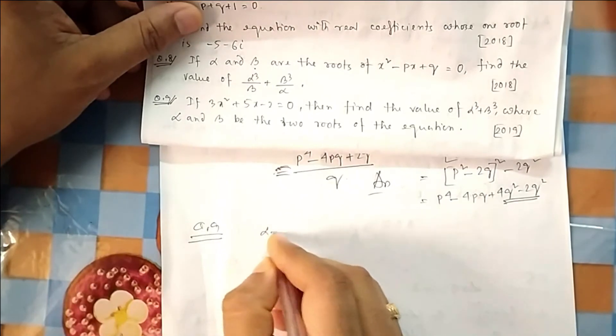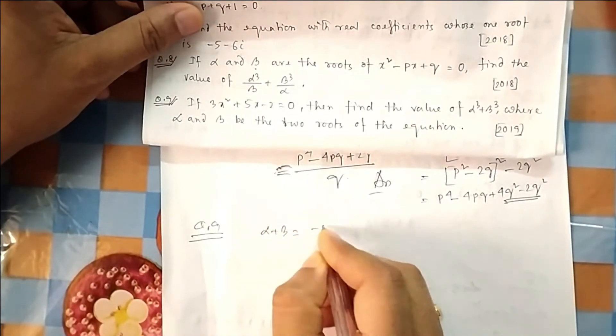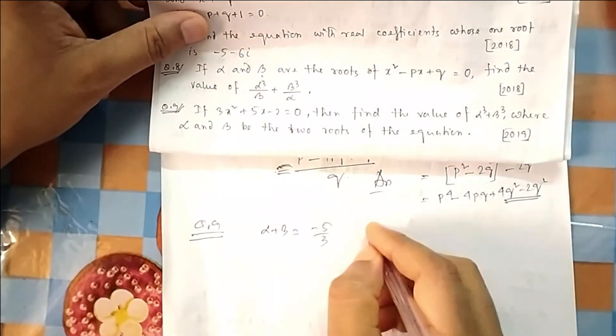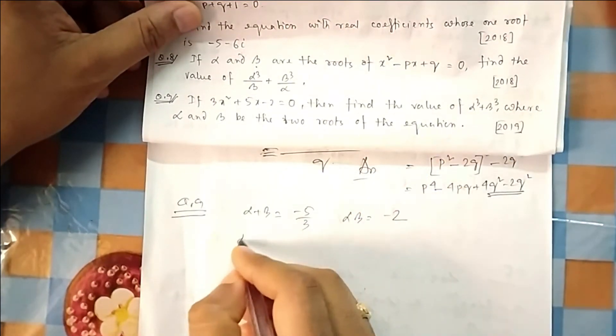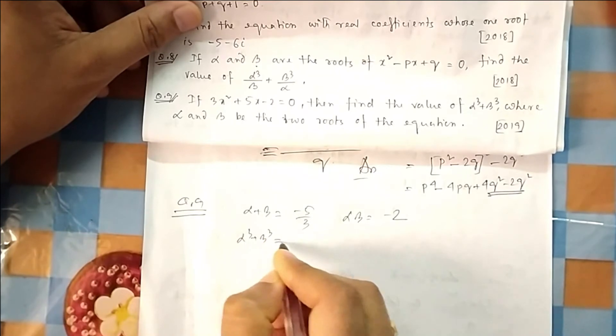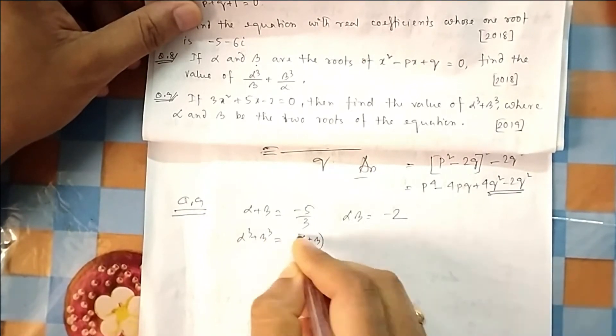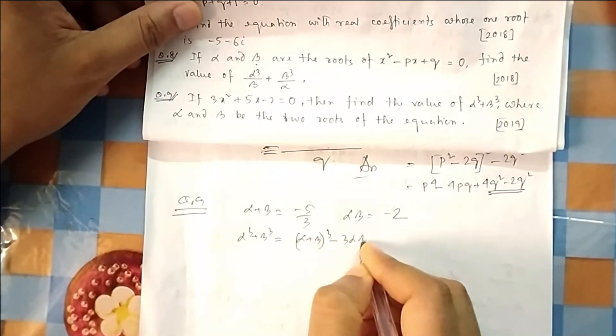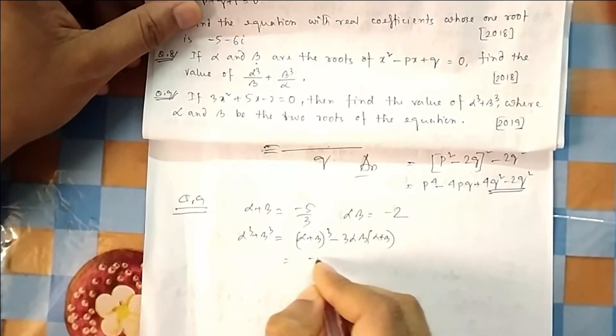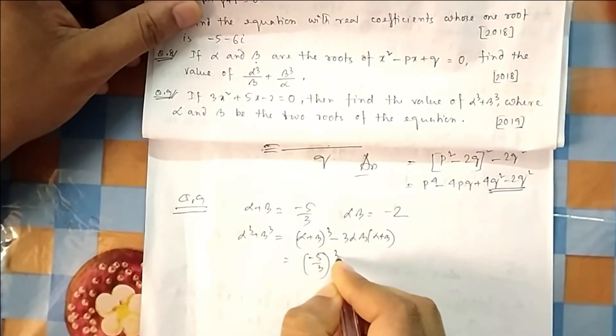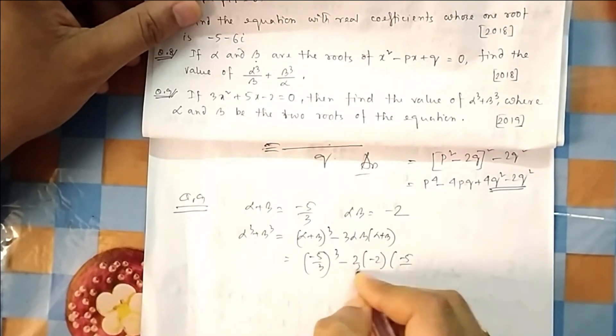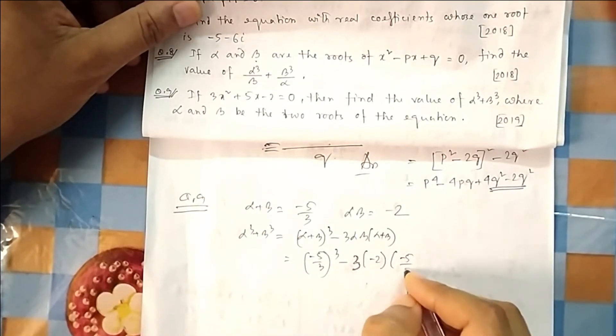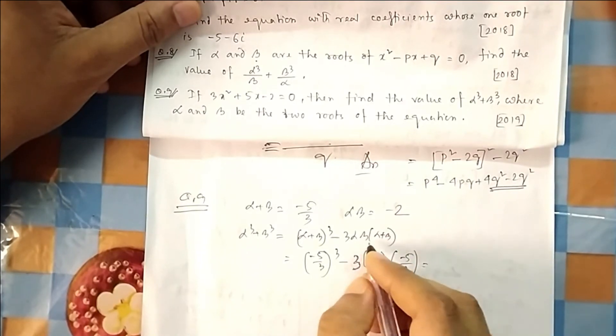Okay, this is also again easy. Sum of the roots is -b/a, -5/3, and product of the roots is -2/3. So what they are asking: find the value of α³ + β³. So what is a³ + b³? (a+b)³ - 3ab(a+b). So you can put this one: (-5/3)³ - 3(-2/3)(-5/3).